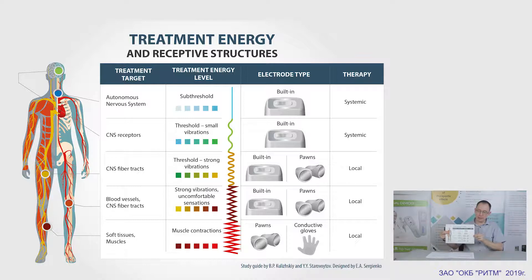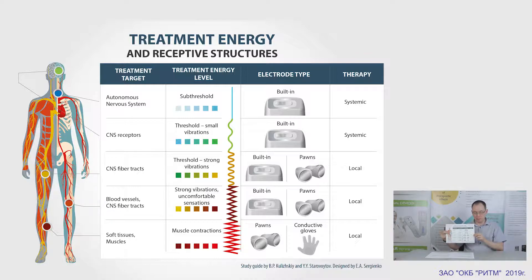The upper threshold level influences the paths of the central nervous system and can be used for conducting-type myostimulation, the treatment of the nervous roots and plexus, as well as for local anti-edemic, anti-inflammatory, and anti-pain therapy. At this level, we can use both built-in and external electrodes.